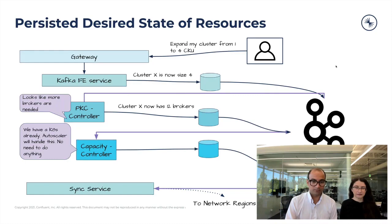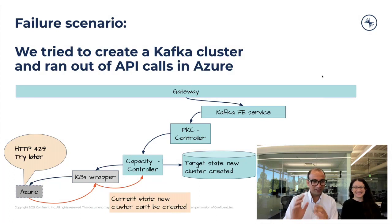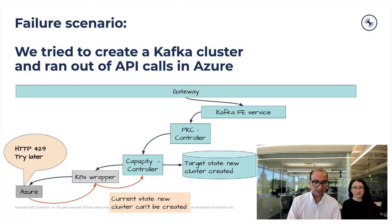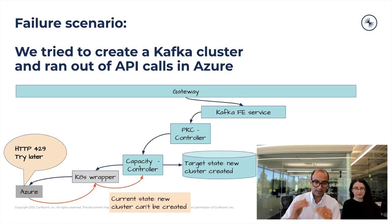Another scenario: if the downstream gets an HTTP 429 error from the cloud provider when trying to spin up a new K8s cluster, it retries and hands back failure to the capacity controller saying the state could not be fulfilled. But all the way down, it keeps retrying because the desired state isn't met yet. All errors from the capacity controller down will keep retrying until the desired state is reached.